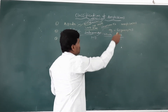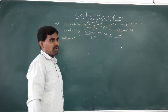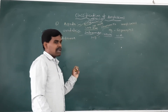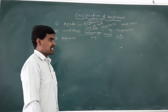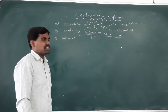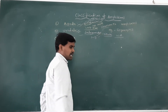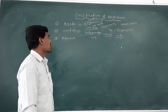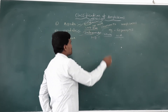Urodela class of newts — the vertebra is procoelous. Sexes are separated. External fertilization, development is direct or indirect development. You will have loss of the animals.